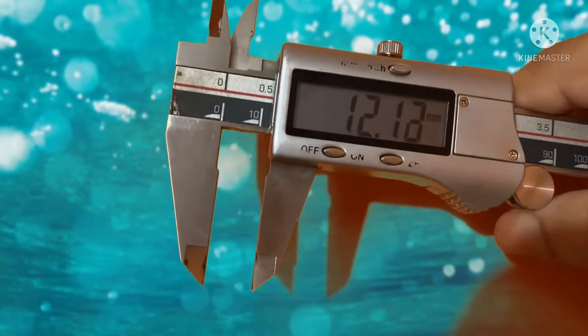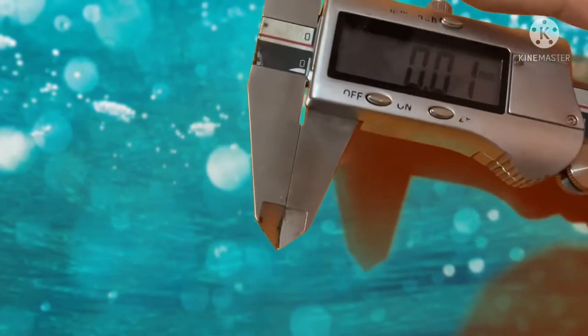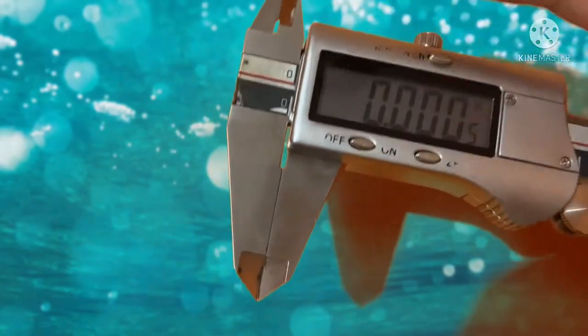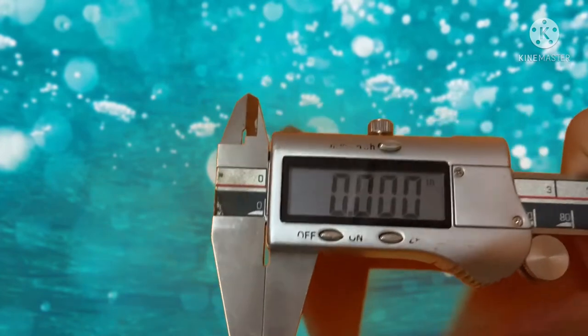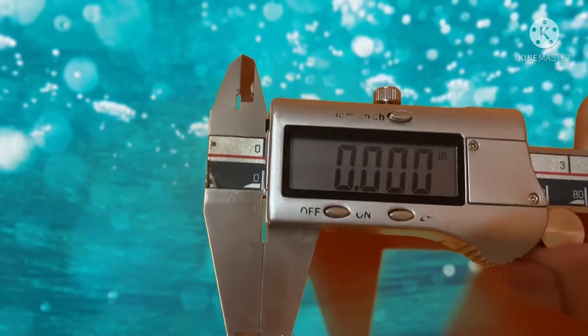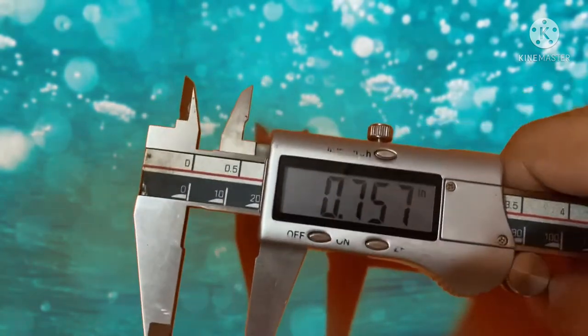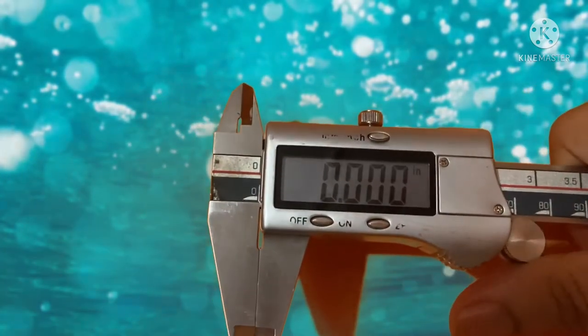This is an industrial vernier caliper. It directly measures—no need to use a formula. There is one arrangement: if you press this button, it will measure the distance between the two jaws in inches. Now slide the vernier, and it will measure the distance between the two jaws in inches. This is a demo of industrial application.